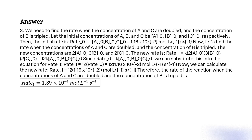The new rate is: Rate1 = k[2A0][3B0][2C0] = 12 × k[A0][B0][C0]. Since Rate0 = k[A0][B0][C0], we can substitute this into the equation for Rate1, giving Rate1 = 12 × Rate0 = 12 × 1.16 × 10⁻² mol L⁻¹ s⁻¹.